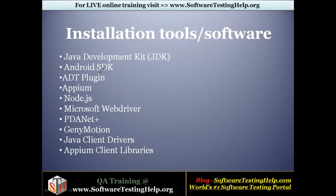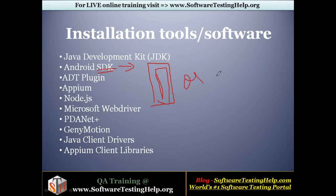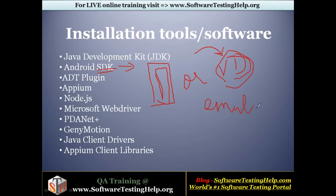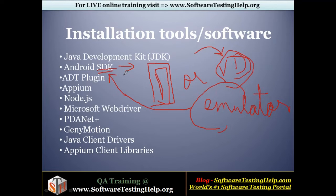The next tool is Android SDK — Software Development Kit. This tool helps you create an emulator. Whenever we try to automate an application on a mobile device, you can either do it directly on a physical device or use a virtual device called an emulator. In order to create emulators of different configurations and OS versions, certain packages must be installed in your machine. Those packages are available in the Android SDK, which gives you options to install packages and create an emulator.